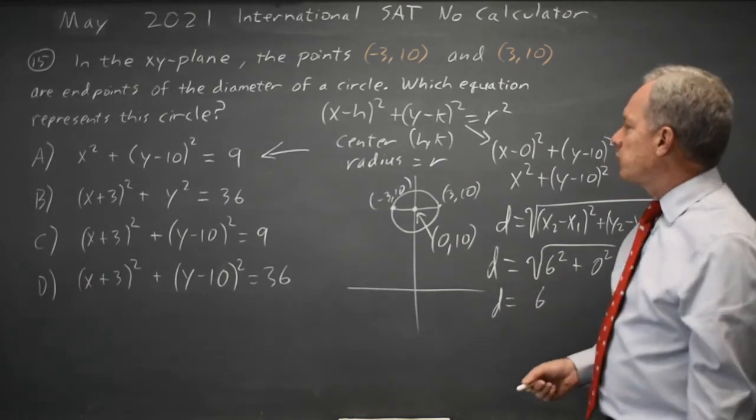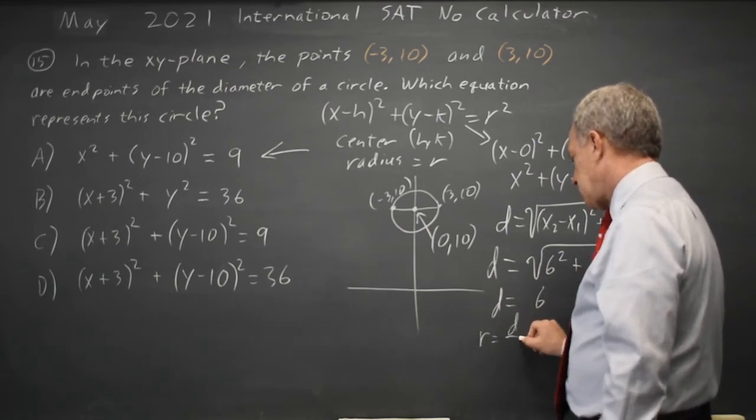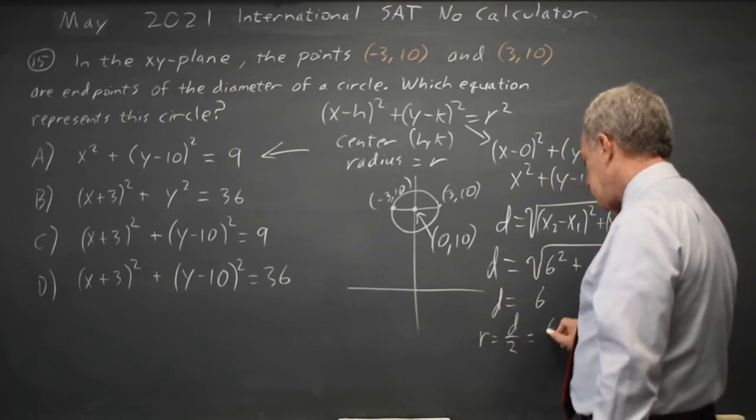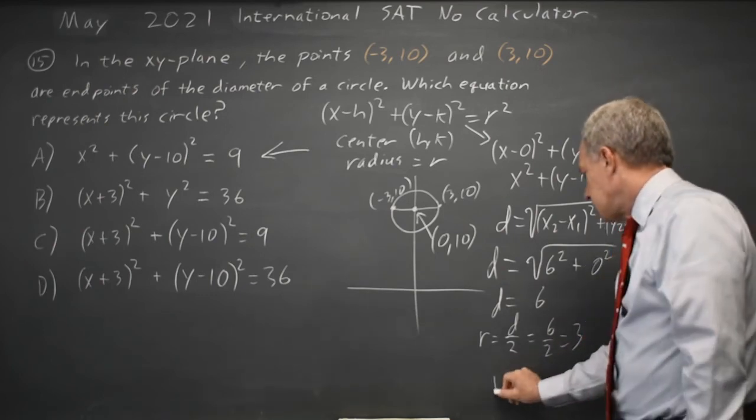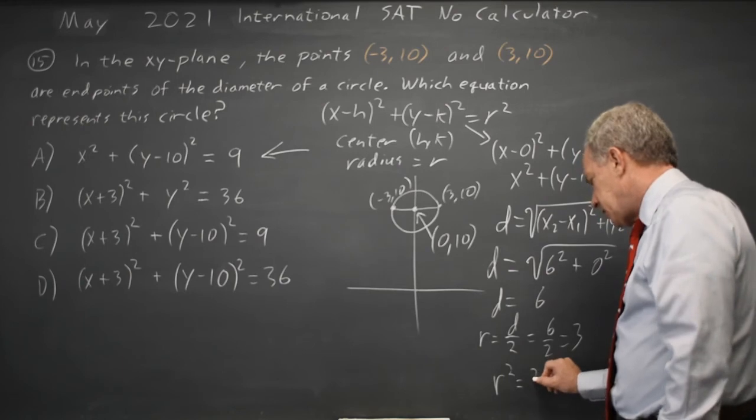But we're looking for the radius. The radius is the diameter over 2, which is 6 over 2, equals 3. So r squared is 3 squared equals 9.